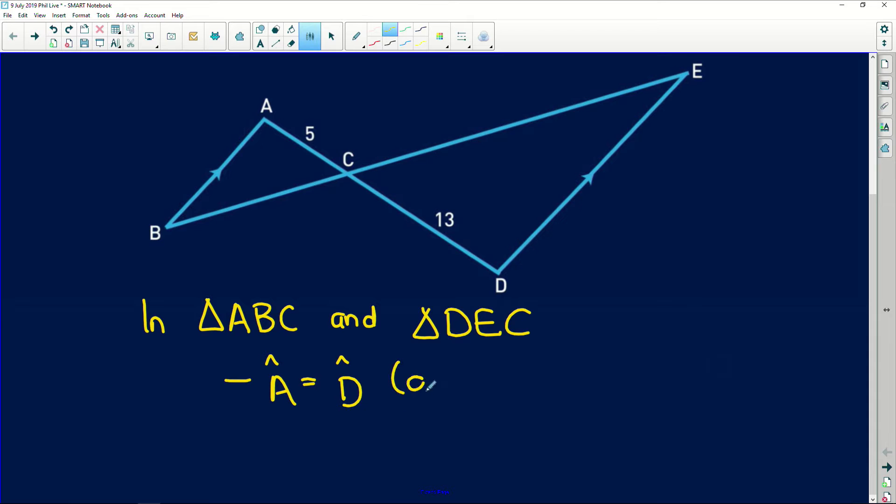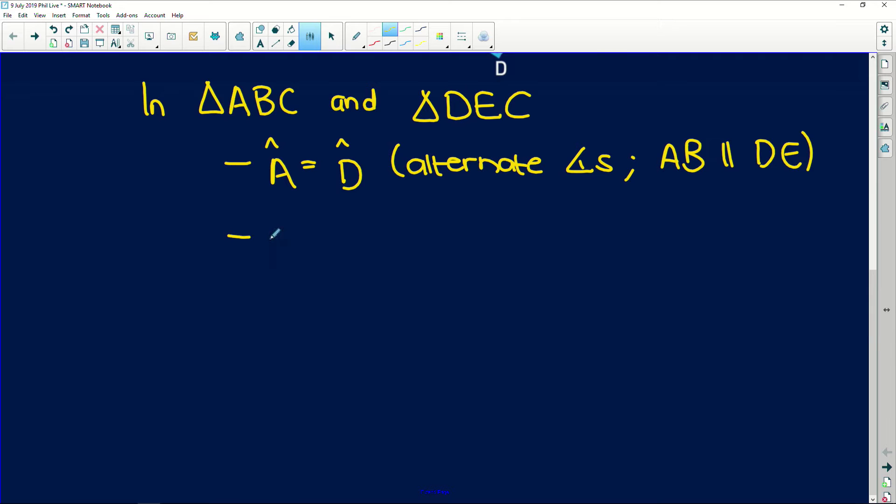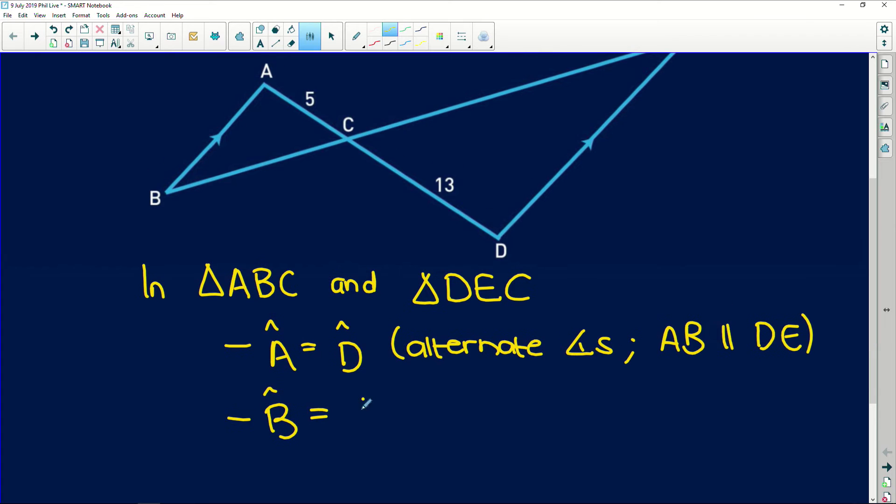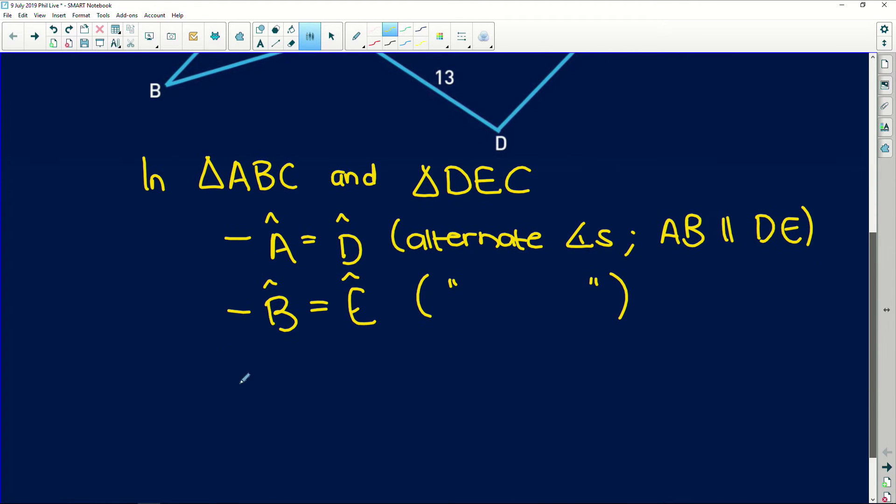Why? Alternate angles. And remember, specifically to mention which parallel lines you're working with, AB is parallel to DE. Secondly, we can see that angle B is equal to angle E, and that is the same reason. Now please write out the whole reason. I'm just doing that to save time.